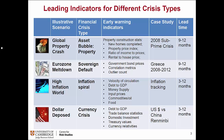So these are the four scenarios we've talked about: the global property crash, the Eurozone meltdown, high inflation world, and dollar deposed. The system of leading indicators we've developed applies to all four scenarios and gives you sometimes a quarter to a year of early warning, sometimes three quarters to a year of early warning.